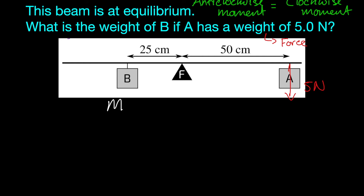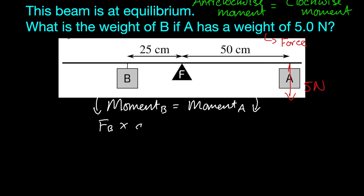The moment of B in this direction is equal to the moment of A in this direction. The equation for moments is force times distance. So that's the force of B times the distance of B, which is equal to the force of A times the distance of A.